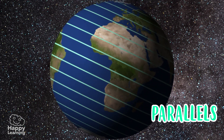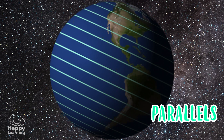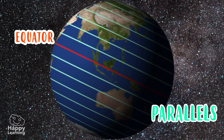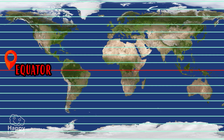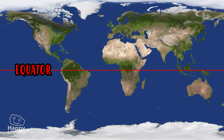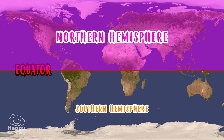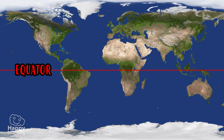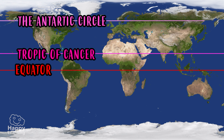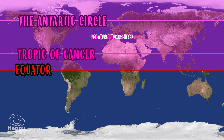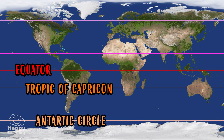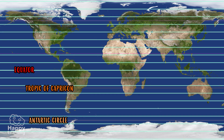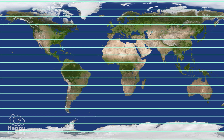The longest horizontal imaginary line is the equator, which you already know, right? The equator is the parallel that divides the earth into two halves: the northern hemisphere and the southern hemisphere. Other important parallels are the tropic of Cancer and the Arctic Circle, which are in the northern hemisphere, and the tropic of Capricorn and the Antarctic Circle, which are in the southern hemisphere. But as you can see, there are many more lines.